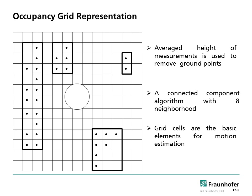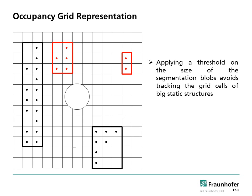We assume that grid cells are the basic elements for motion estimation, which means that each grid cell has its own velocity vector. Then, we apply a threshold on the size of the extracted blobs to prune huge ones. This avoids tracking the grid cells of big static structures such as buildings. After applying the threshold, only the grid cells inside the red boxes will be tracked.